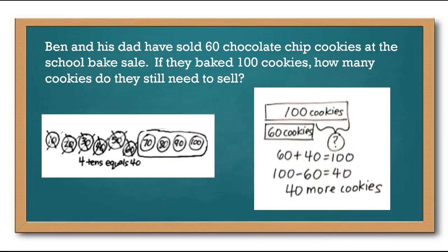Or you could have solved it like this. You could have drawn a little diagram for yourself and you could have put 100 cookies here and 60 cookies and you need to find this space right here. So 60 plus 40 equals 100 or 100 minus 60 equals 40. You could have done 60 plus what equals 100 and you found 40, or you could have done 100 minus 60 equals 40 and you would have found out that they would need to sell 40 more cookies.